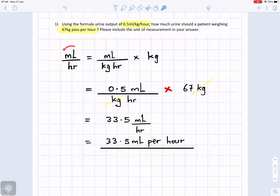So we want to get milliliters per hour. That means milliliters divided by the hour. So we are given milliliters per kilogram per hour.